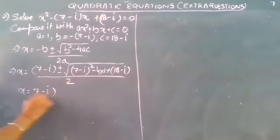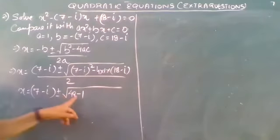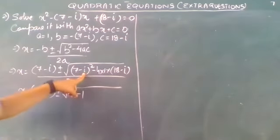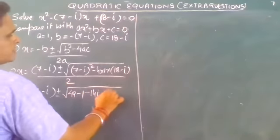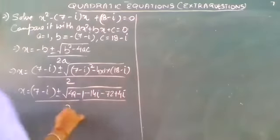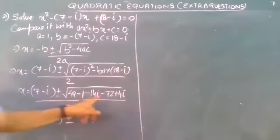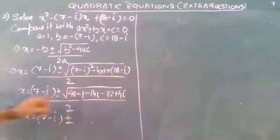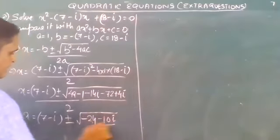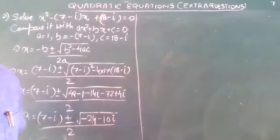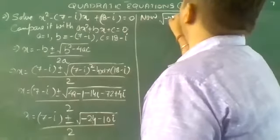So x = (7 - i) ± √[(7 - i)² - 4(18 - i)] / 2. Expanding (7 - i)² using (a - b)² = a² - 2ab + b²: 49 - 14i + i² = 49 - 14i - 1 = 48 - 14i. Then subtracting 4(18 - i) = 72 - 4i: discriminant = 48 - 14i - 72 + 4i = -24 - 10i.